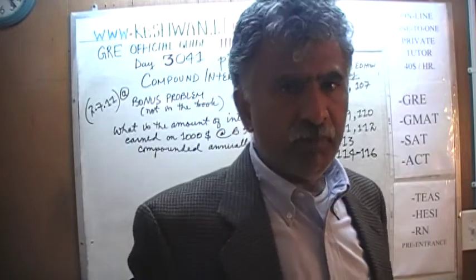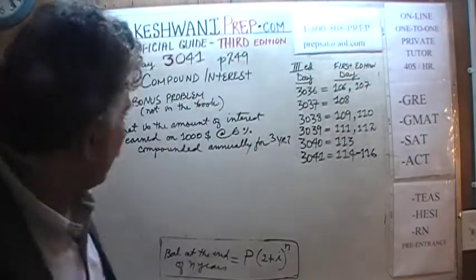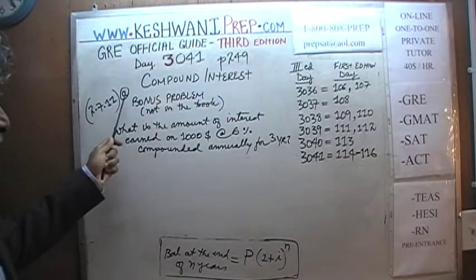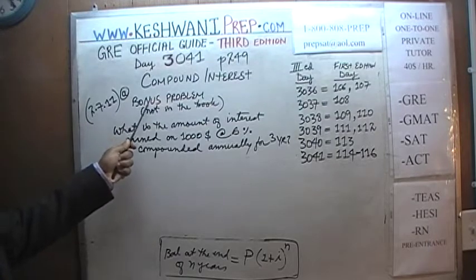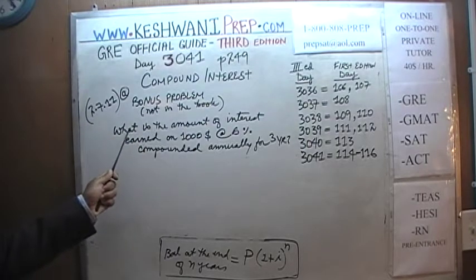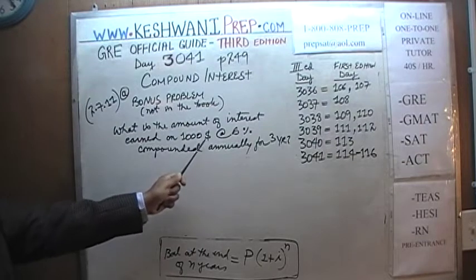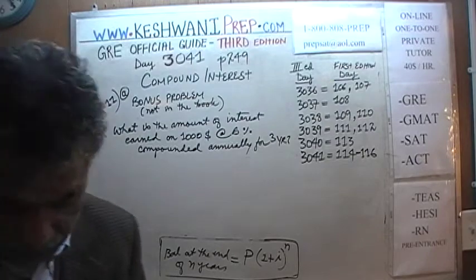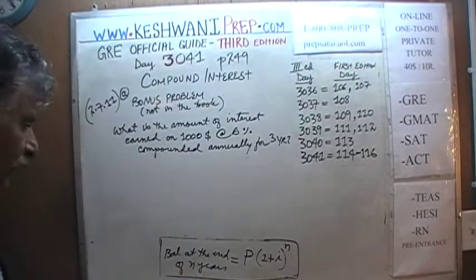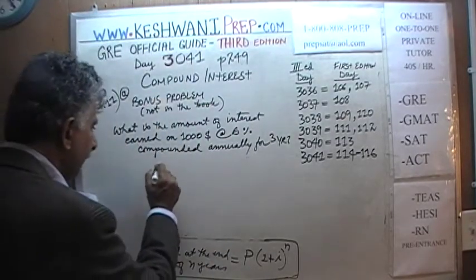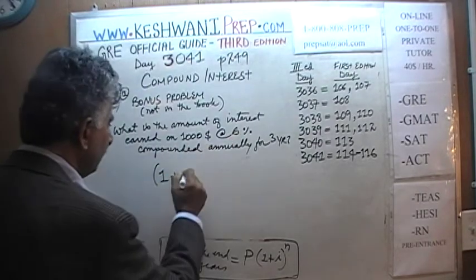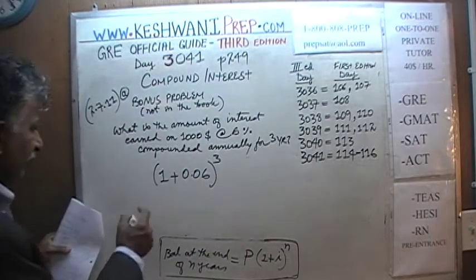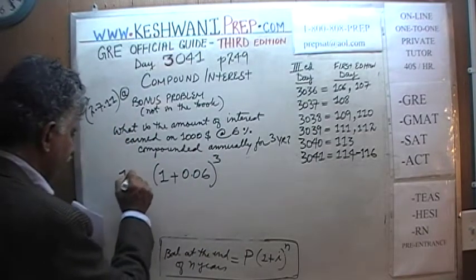Now let's do the problem on the blackboard. This problem is not in the book, so we'll call it 2.7.11a — it's a bonus problem. It says: what is the amount of interest earned on $1,000 at 6% compounded annually for 3 years? The amount of money we'll have at the end of 3 years is 1,000 times (1 + 0.06) raised to 3.